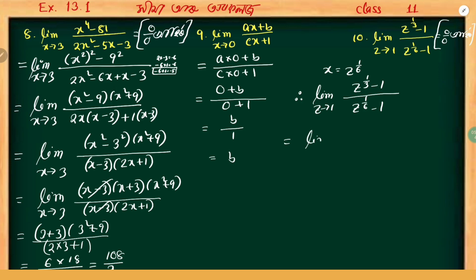Let z to the power 1 by 6 equal to x. This means z equals x to the power 6. If we write z to the power 1 by 3, we can write it as z to the power 1 by 6 times 2. We can write this as x to the power 2.